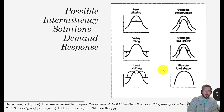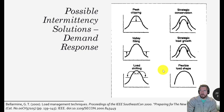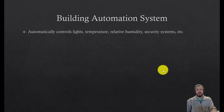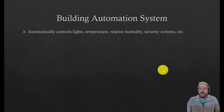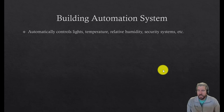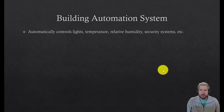I want to talk about one more solution: demand response in more depth. A building automation system, or BAS, is the actual system that controls lights, temperature, relative humidity, and everything in spaces that uses energy. It can also control security systems and other things, though we won't focus too much on that.